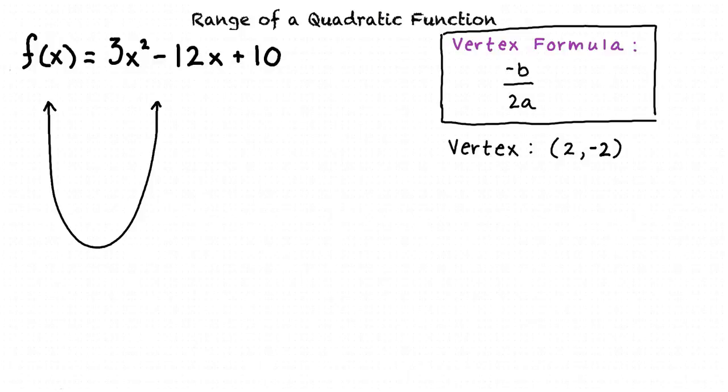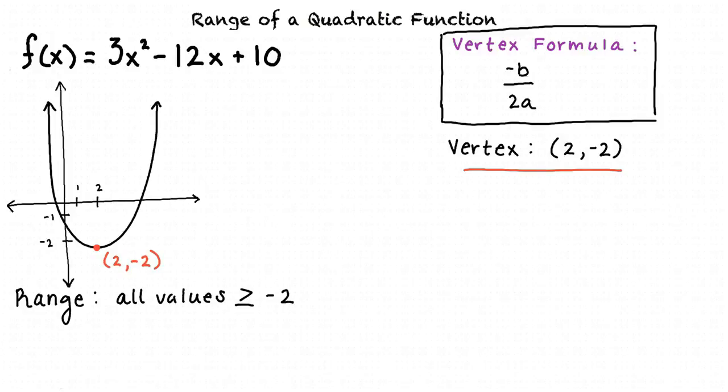Why is it important to have this information? Well, if we know the vertex and that the parabola will open upwards, we can determine that the range of this function is all y values greater than or equal to negative 2. The minimum y value of this function is negative 2, where the vertex occurs. And all other y values are greater than negative 2, continuing on all the way to positive infinity.